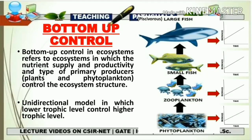Bottom-up control in an ecosystem refers to a system where nutrient supply, productivity, and the type of primary producer control the ecosystem structure. It is a unidirectional model in which the lower trophic level controls the higher trophic level — the opposite of top-down control. Here, lower trophic level organisms control the population of higher trophic level organisms. Something from the bottom affects the organisms above, which is why it's called bottom-up control.